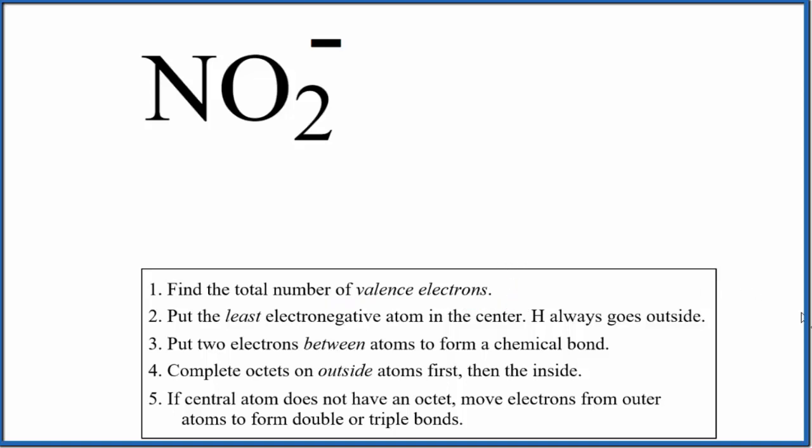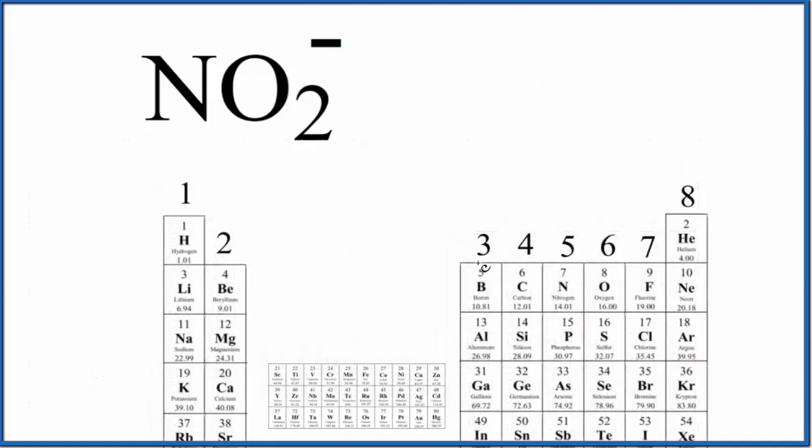It's helpful if we look at the periodic table here. So nitrogen right here, group 15, sometimes called 5A, that has five valence electrons. Oxygen, that's in group 16, sometimes called 6A, six valence electrons.